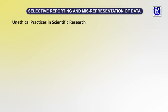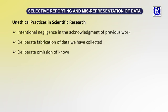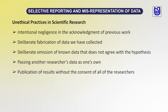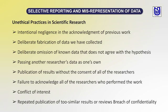Unethical practices in scientific research include: intentional negligence in acknowledgement of previous work, deliberate fabrication of collected data, deliberate omission of known data that does not agree with the hypothesis, passing another researcher's data as one's own, publication of results without the consent of all researchers, failure to acknowledge all researchers who performed the work, conflict of interest, repeated publication of similar results, and breaches of confidentiality.